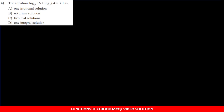Fourth question: equation log16(base x²) + log64(base 2x) = 3 given hai, aur solution ka nature batana hai - irrational, no real value, 2 real values, ya ek integer value. X log ke base mein hai dono jagah, aur base alag hai - ek jagah x² hai, doosri jagah 2x. Base same karna hoga base change property se.